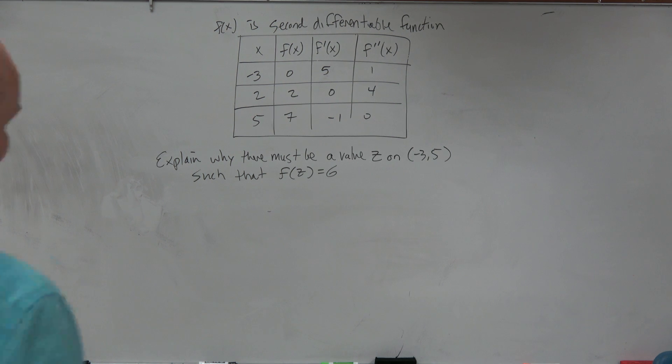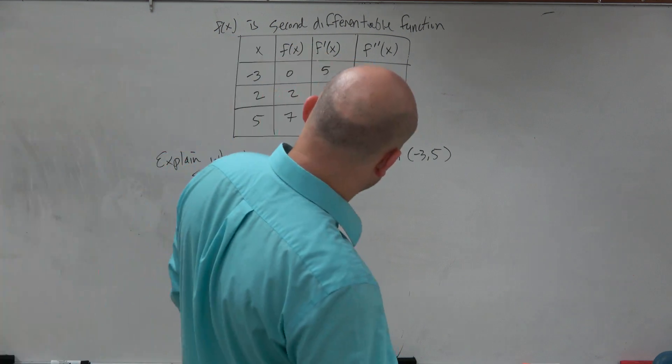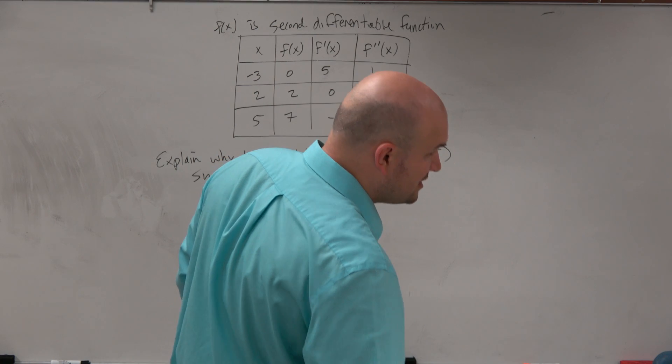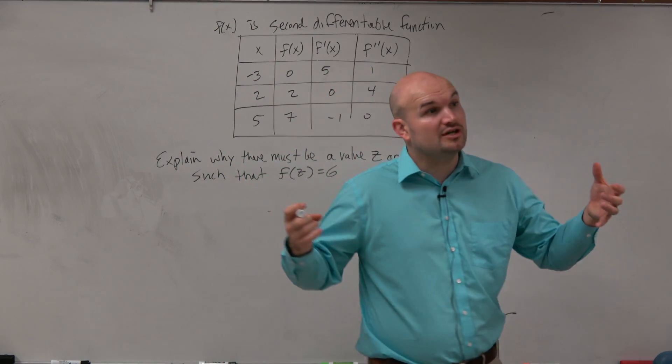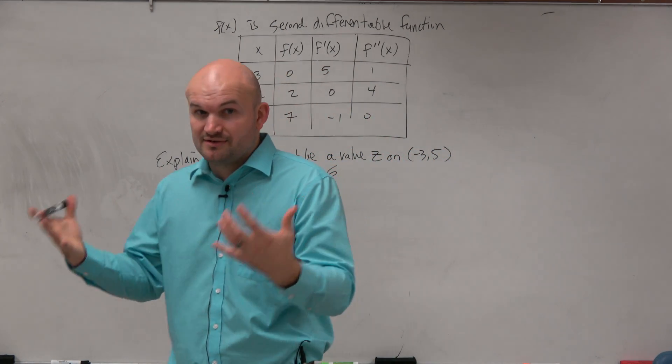Explain why there must be a value z on the interval negative 3, 5 such that f of z equals 6. So again, using the IVT, we've got to make sure that we have a continuous and differentiable function.